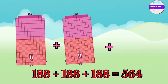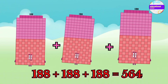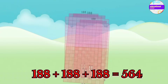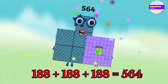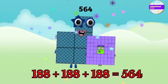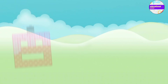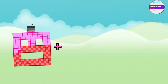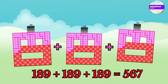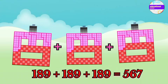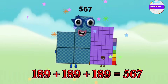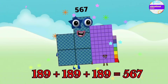188 plus 188 plus 188 equals 564. 189 plus 189 plus 189 equals 567.